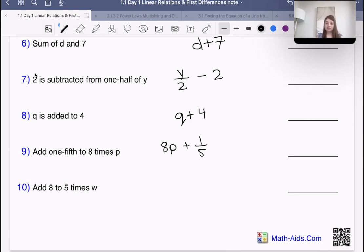Then it says add eight to five times W. Let's do that. Five times W, and then it says add eight to that quantity, so plus eight.